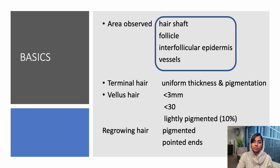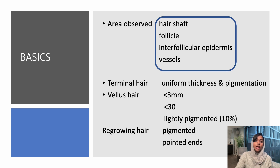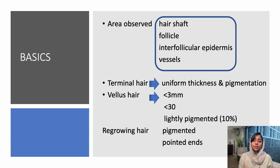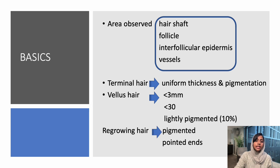In a normal scalp, you need to identify terminal hair, vellus hair, and regrowing hair. Terminal hair can be spotted by its uniform thickness and pigmentation. Vellus hairs will be shorter in length, lesser in diameter, and lightly pigmented. The proportion of vellus hair is normally 10%, while in a pathological condition it can be greater than 10%. Regrowing hairs are pigmented hairs but with pointed ends.